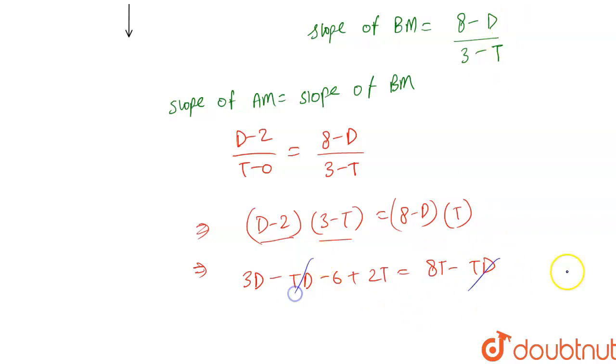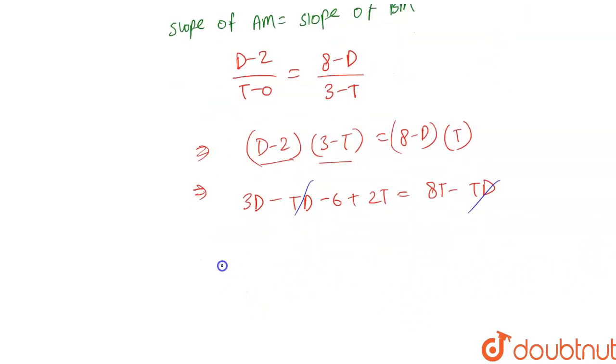Here you can see that td will cancel out. Finally we have 3d, and when you take 8t to this side it becomes -8t, and 2t - 8t gives -6t, minus 6 equals 0.